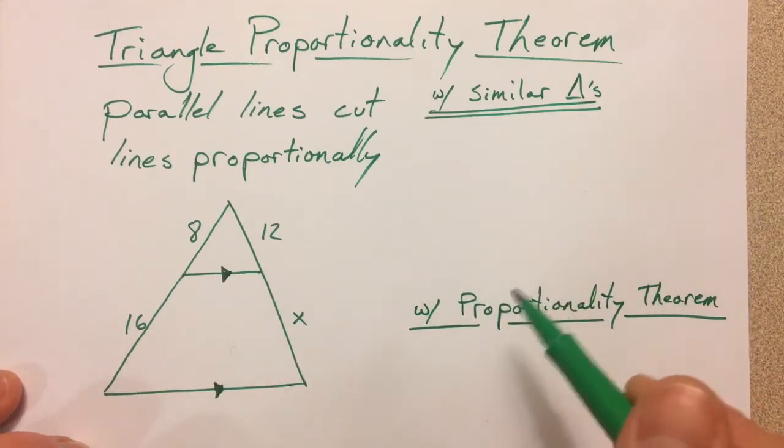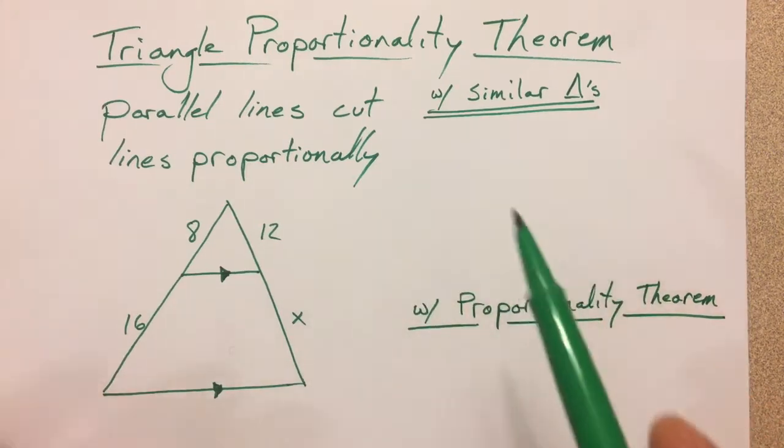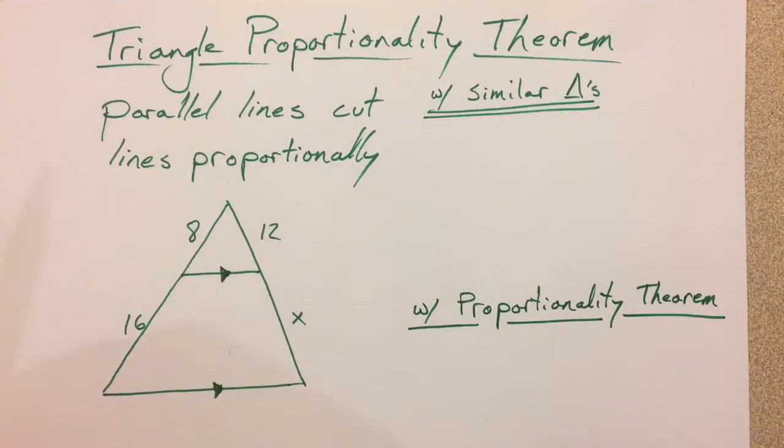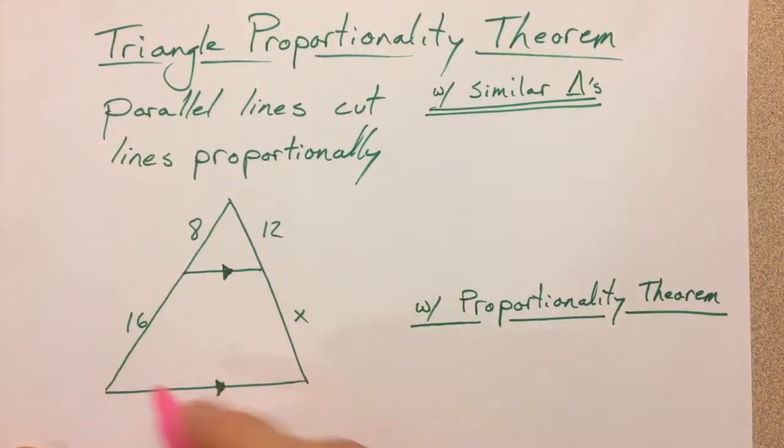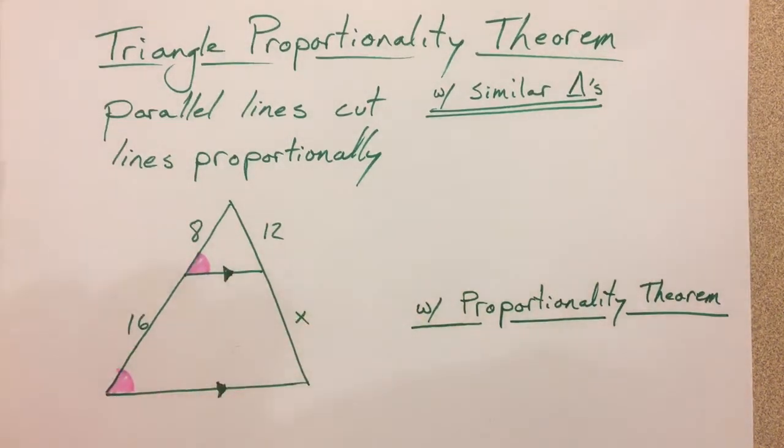I'll prove the triangle proportionality theorem in a different video, but for right now we've got two parallel lines, and so this angle right here and this angle right here are corresponding angles, and so those two angles are the same.